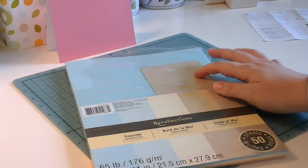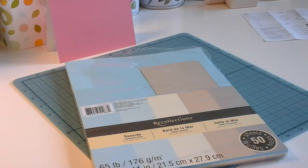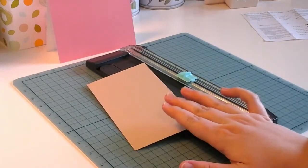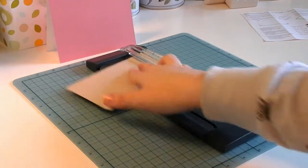I've already cut down a piece of cardstock to a specific size using my paper trimmer. You just line it up and slice it along.